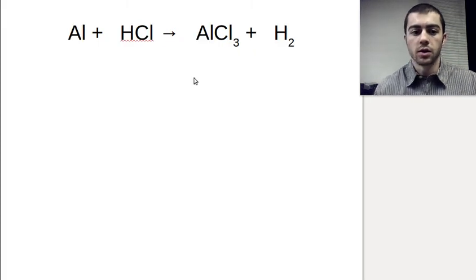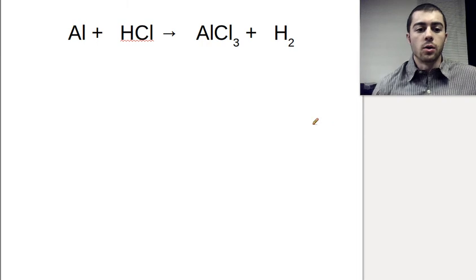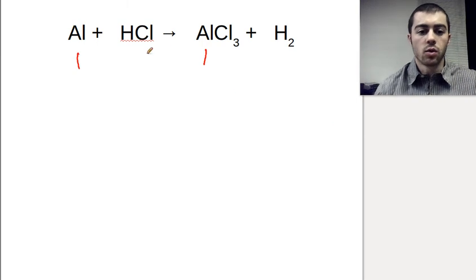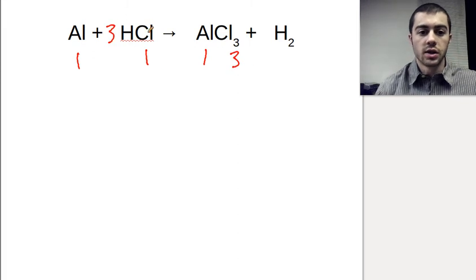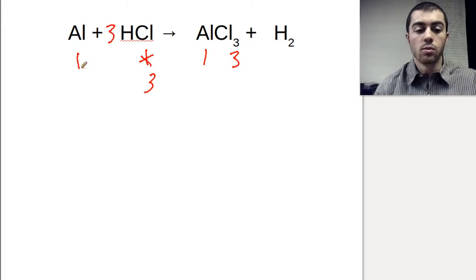So the next one here, we have Al plus HCl making AlCl₃ plus H₂. So one aluminum, one aluminum — we're good there. Next element, we have chlorine: we have one and three. So we add a three, so that three times one gives us now three chlorines. Three chlorines, three chlorines, one aluminum, one aluminum.